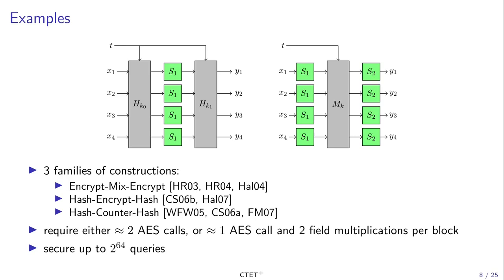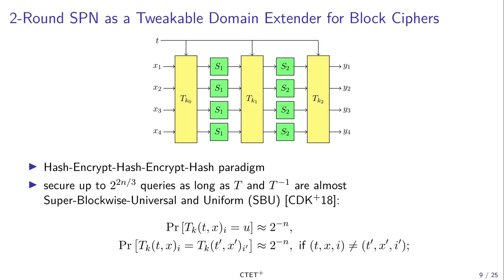These constructions all solve the granularity issue but do not solve the birthday bound issue. If we want to get security beyond the birthday bound, we actually have to increase the number of layers, and the two-round SPN has already been used as a tweakable domain extender for block ciphers. It can be seen as an example of the hash-encrypt-hash-encrypt-hash paradigm, and it has already been proven secure up to 2^(2N/3) queries as long as T and T^(-1) satisfy some properties.